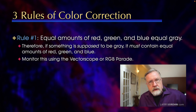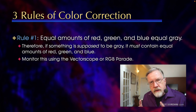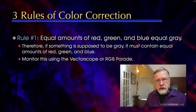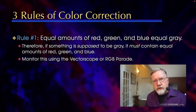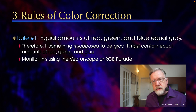And how do we see equal amounts of red, green, and blue? We see it on the vectorscope — it's a single dot in the center of the vectorscope. Or it's on the RGB parade where the red, green, and blue values are equal. So this is probably the most helpful rule in color correcting. If something is supposed to be gray, it must contain equal amounts of red, green, and blue. And I'll illustrate that in just a minute.